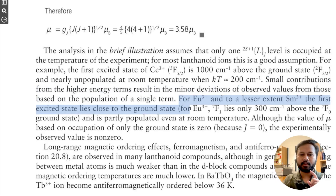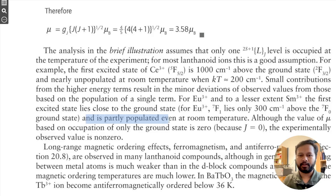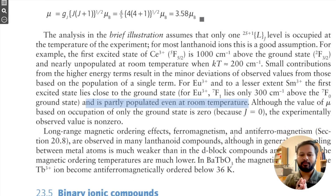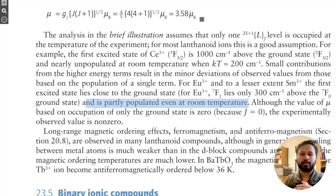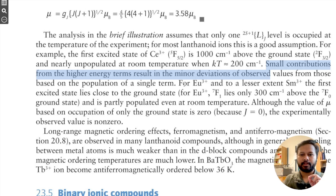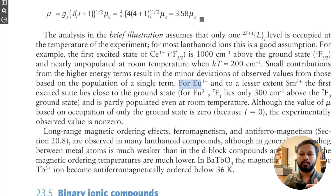A small contribution from higher energy terms results in minor deviations of observed values. However, for Eu³⁺ and to a lesser extent Sm³⁺, the first excited state lies close to the ground state — only about 300 cm⁻¹ difference — and is partially populated even at room temperature. Although the magnetic moment based on only the ground state would be 0, the experimentally observed value is non-zero. So Eu³⁺ and Sm³⁺ are exceptions where contribution comes from a higher energy state.